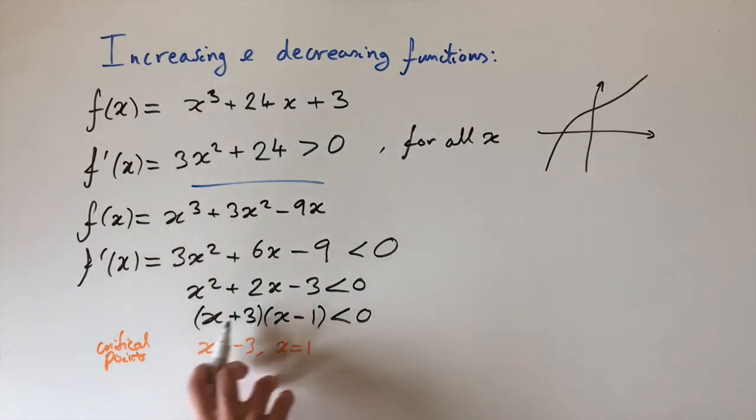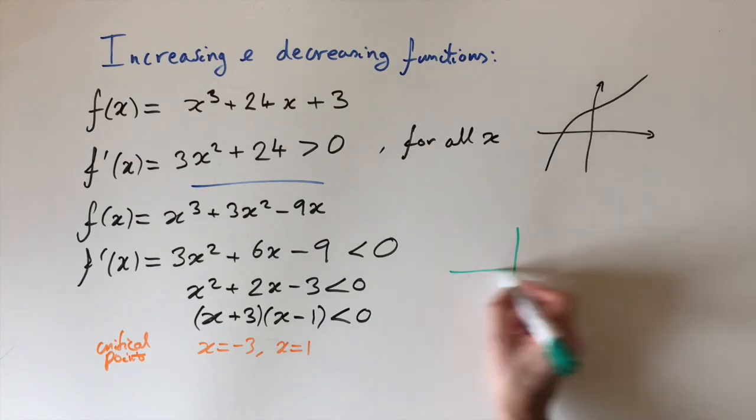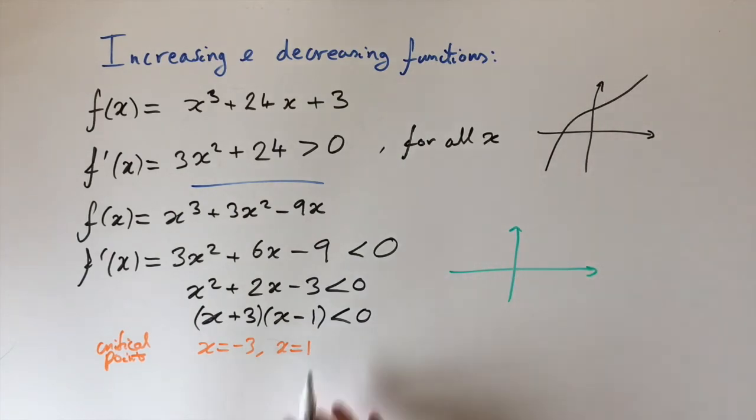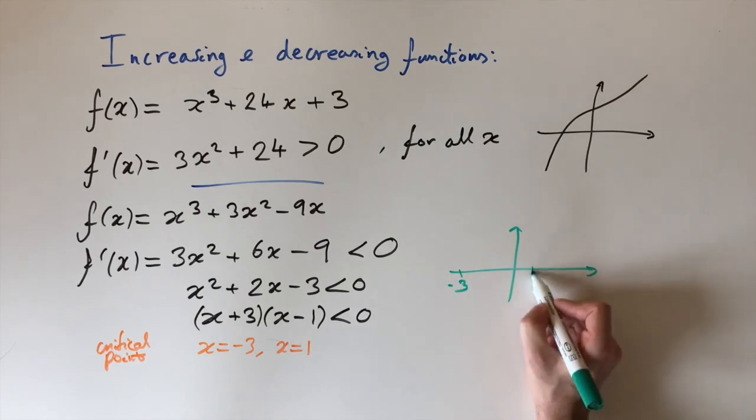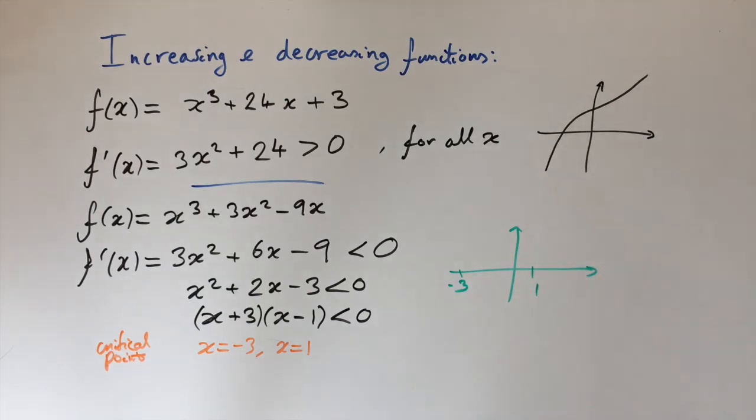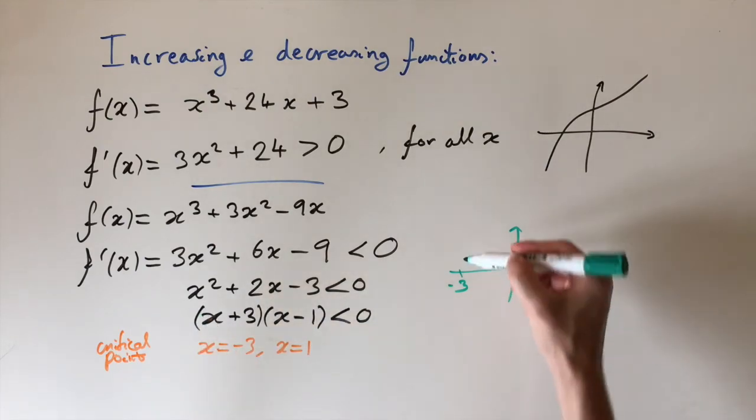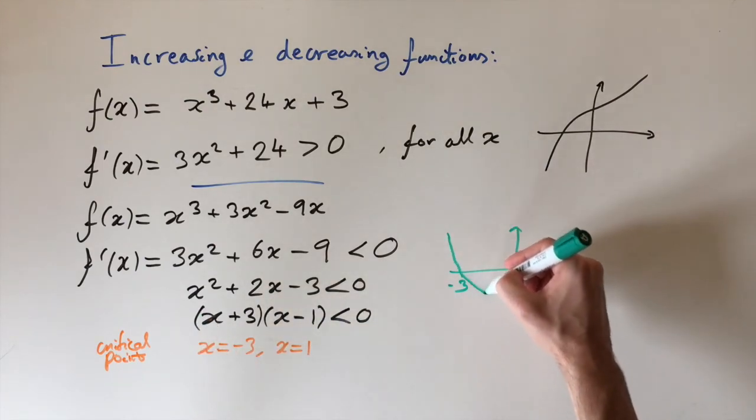So now to do this, we want to actually sketch this quadratic. So I'm just going to draw the xy plane here. And then to do this, we need the critical points because they tell us when this function crosses the x-axis. And this is when x equals -3, and when x equals 1. This is very rough. But then we have a positive quadratic, it's turning upwards. So the shape is going to be roughly like this.